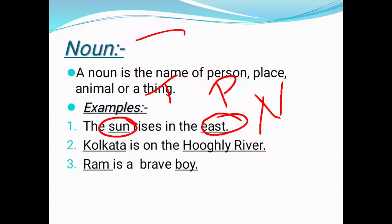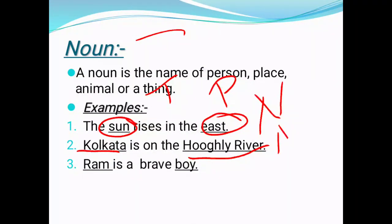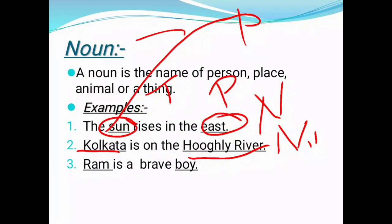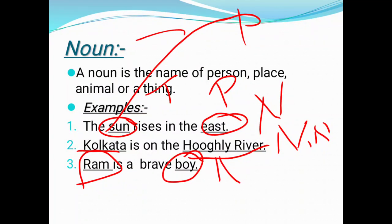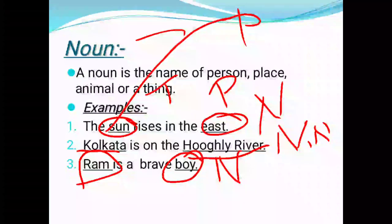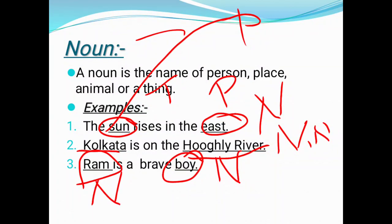Moving towards the next sentence: 'Kolkata is on the Hooghly River.' In this sentence, Kolkata and Hooghly River are our nouns. Kolkata is the noun of place, and Hooghly River is the noun of name. In the sentence 'Ram is a brave boy,' Ram and boy are our nouns. Ram is the noun of name, and boy is the simple noun.